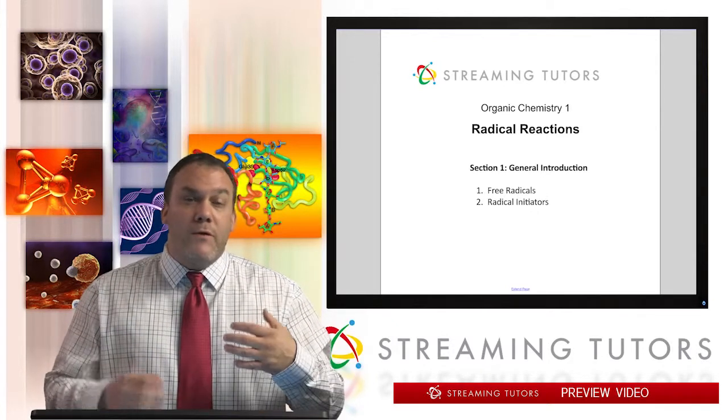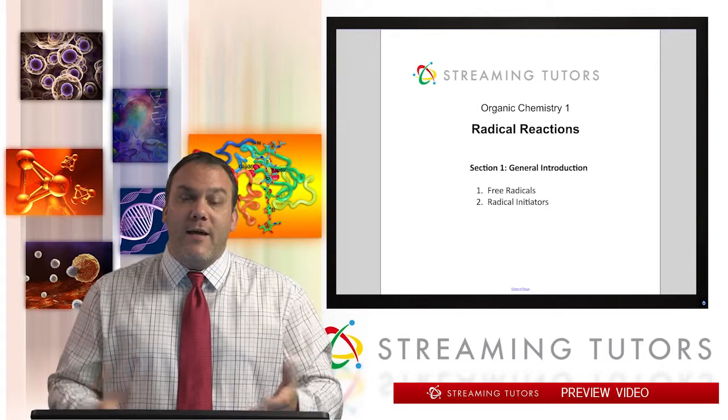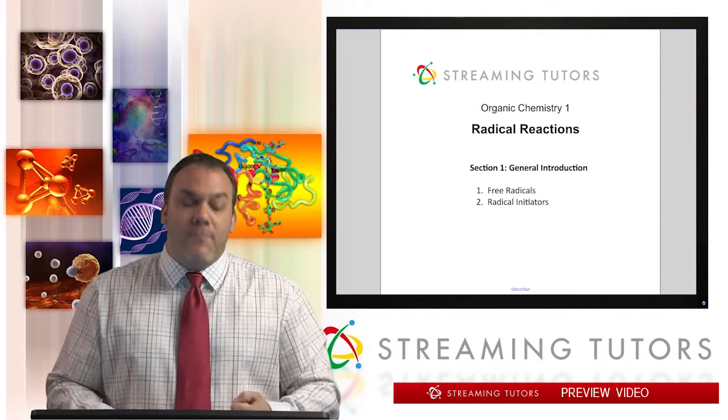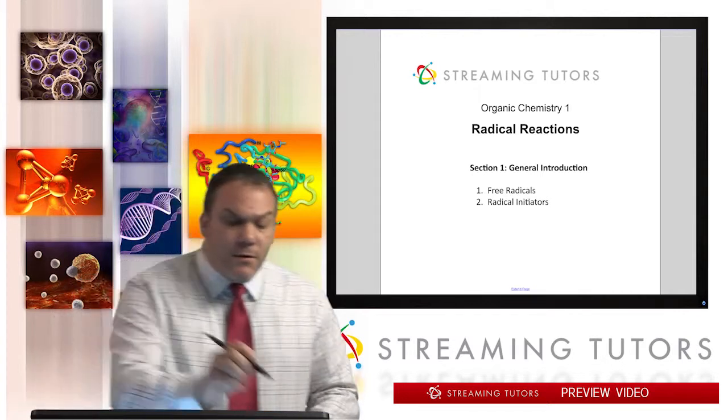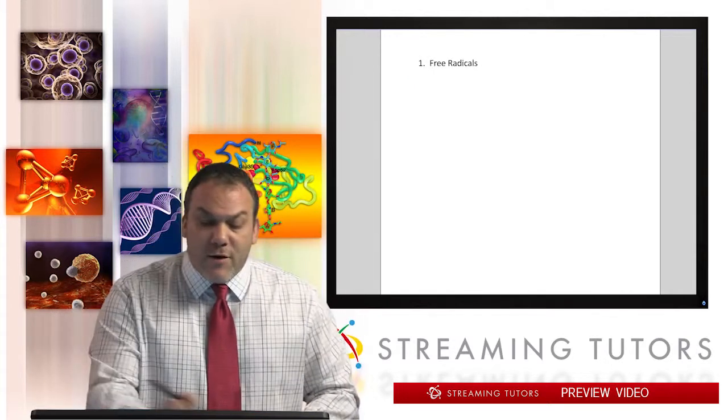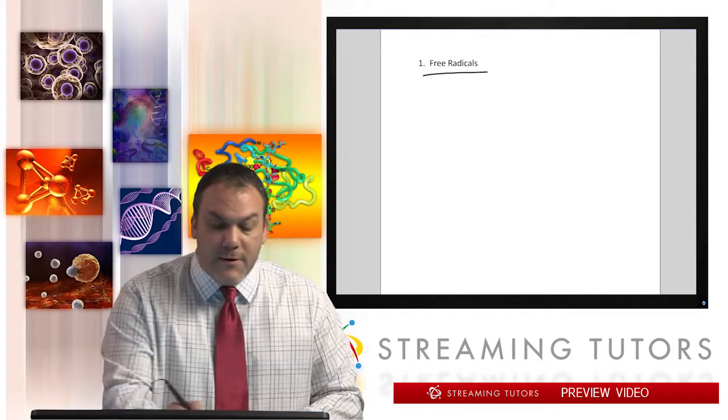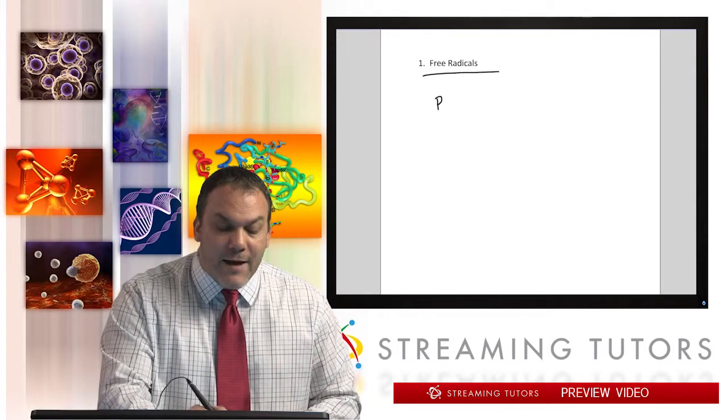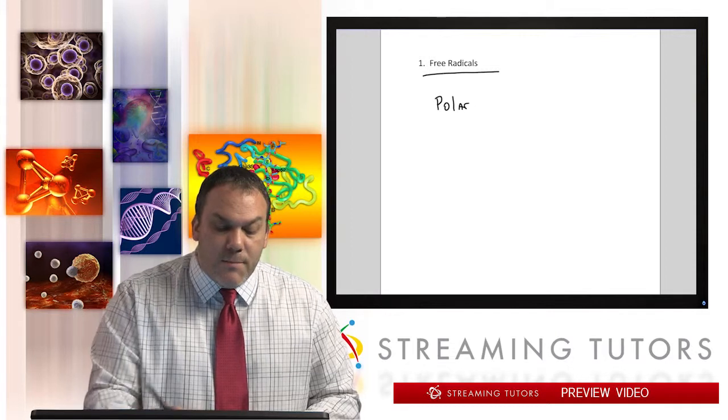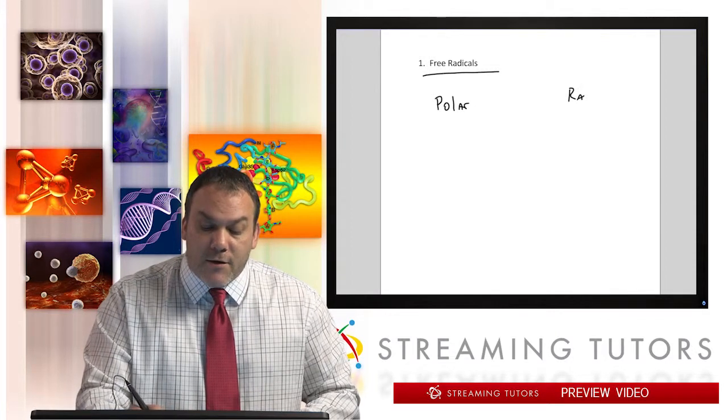The homolytic and homogenic processes—we're going to learn all about them. First, let's talk about the summary of the free radical reaction. There are two categories of reactions: polar and radical. These are major type reactions that cover practically all the reactions we talk about.